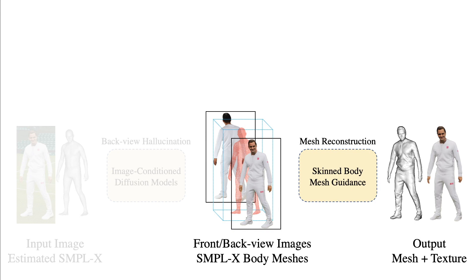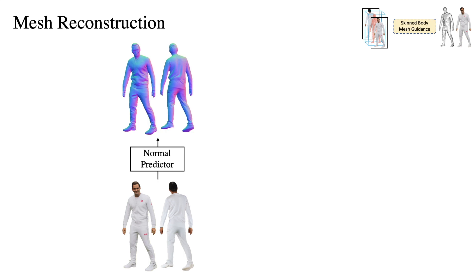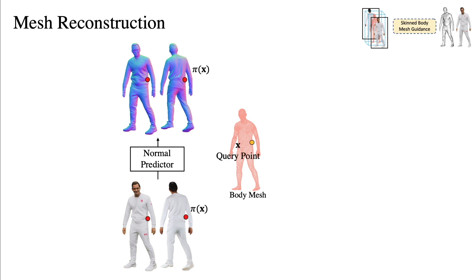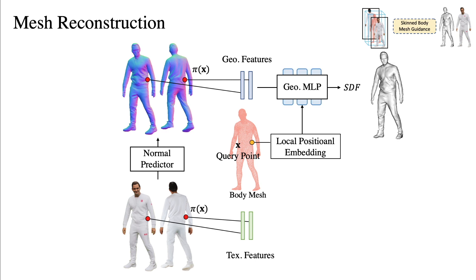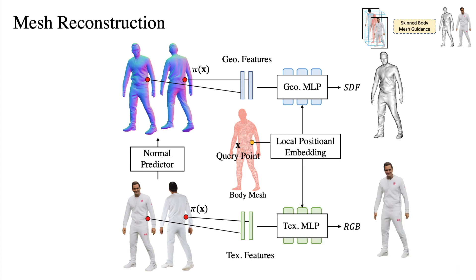Once we have the back-view images, we move to the next stage, reconstructing 3D textured meshes guided by both sets of images and the skinned body mesh. Given front and back images, we predict surface normals for both images via a learned normal predictor. Training and inference require queries of features from both color and normal images. To achieve this, we align the simple X-body meshes with these images in 3D space. A query point X is then projected onto the 2D images to retrieve texture and geometry features. To fully utilize the body mesh as guidance, we develop a positional embedding function that maps the global coordinates of X to the local coordinates of the body mesh. The local positional embeddings, along with the corresponding features, are fed to two MLPs that predict the color and SDF at point X.